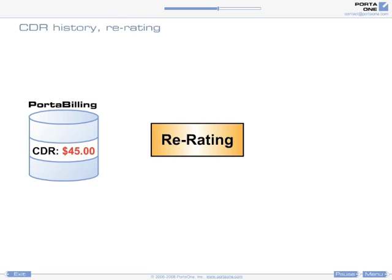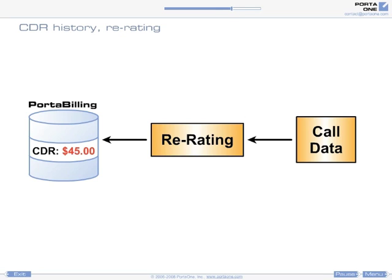Portabilling includes a utility that can be used for retroactive billing. This utility can take billing input data from a certain period of time, covering the interval from the moment the mistake was made until it was repaired, and resend them to the billing engine for processing. The Portabilling engine supports a special reprocessing mode in which all old CDRs for a specific call are erased, rolling back the balances as if the call had never occurred. It then charges the call again according to the current configuration.